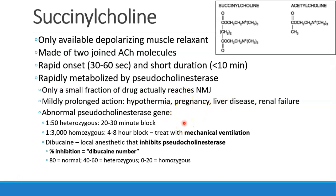You may see prolonged action in patients who are hypothermic, pregnant, have liver disease, or renal failure. Patients with an abnormal pseudocholinesterase gene will have prolonged activity of succinylcholine. About 1 in 50 people is heterozygous — one normal copy and one abnormal copy — and may have a 20 to 30-minute block. 1 in 3,000 patients are homozygous for an abnormal gene and will have 4 to 8 hours of blockade after a single dose. There is no treatment; the best recommendation is to support them with mechanical ventilation until they recover.